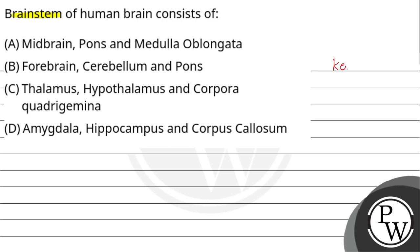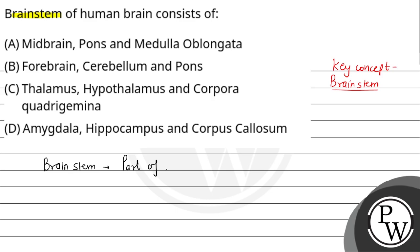First, let's see the key concept of this question. We are going to discuss about the brainstem, which is a part of the human brain. The human brain is basically divided into three parts: forebrain, midbrain and hindbrain.